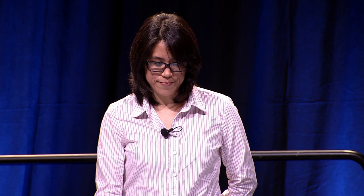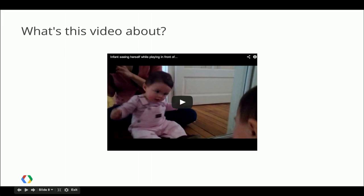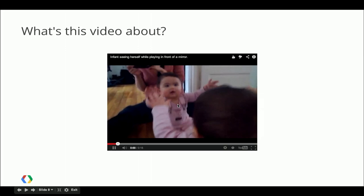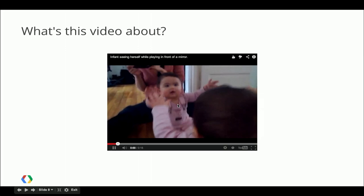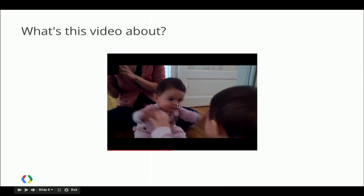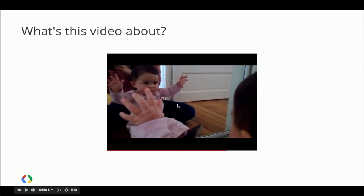Now that you understand why video annotations and quality video annotations are important for content, let's go into my favorite example. This is my daughter. And if you're a human being, what would you say this video is about? Self-discovery is kind of a step in development. Mirrors. So you can talk about some things in the scene, particular people in the scene describing what you see there. What does YouTube think of this video?